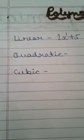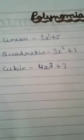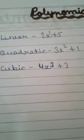Example of quadratic polynomial: 3x squared plus 1. In this, the highest power of the variable is 2. In cubic polynomial, the highest power of the variable is 3.